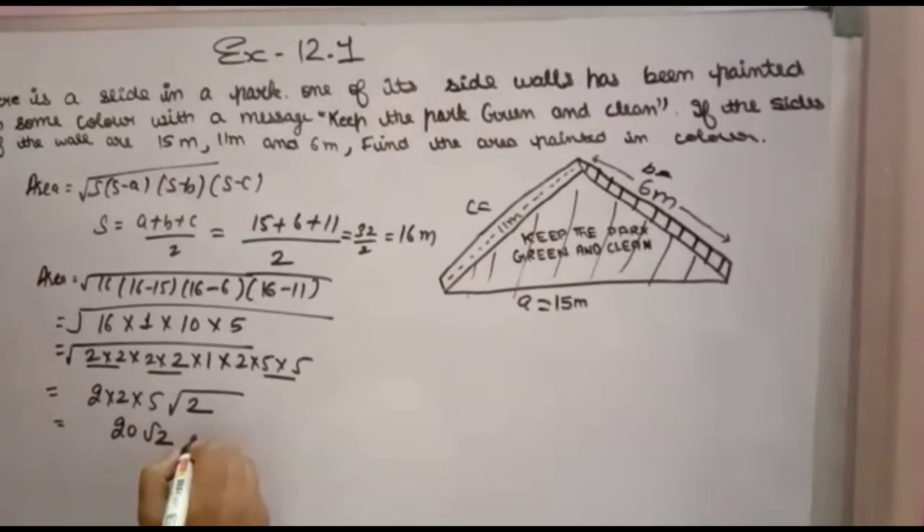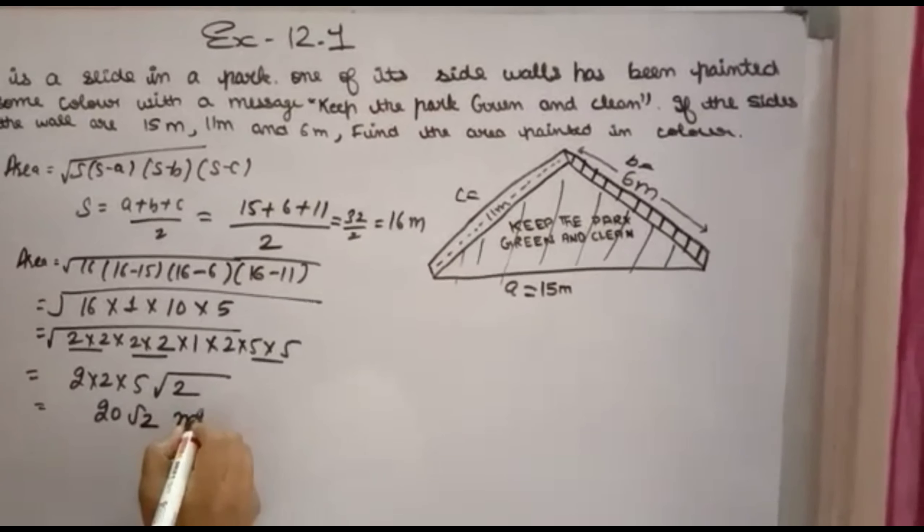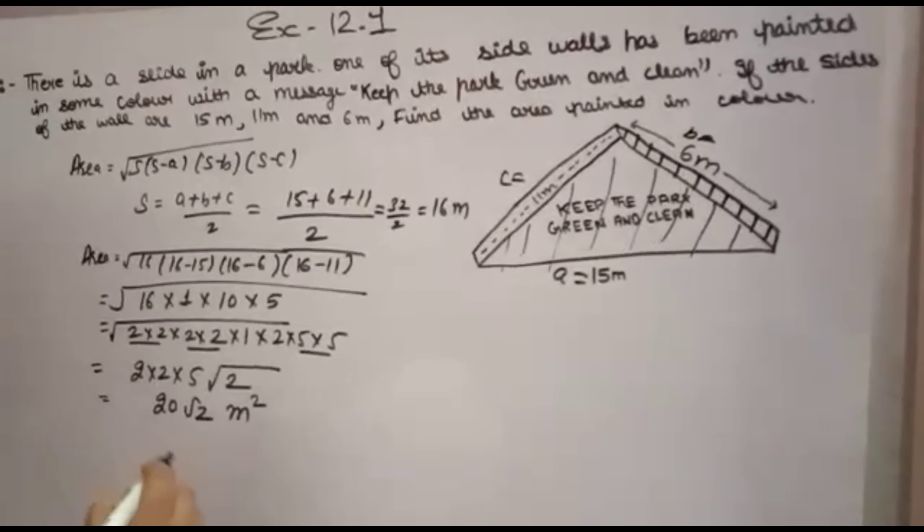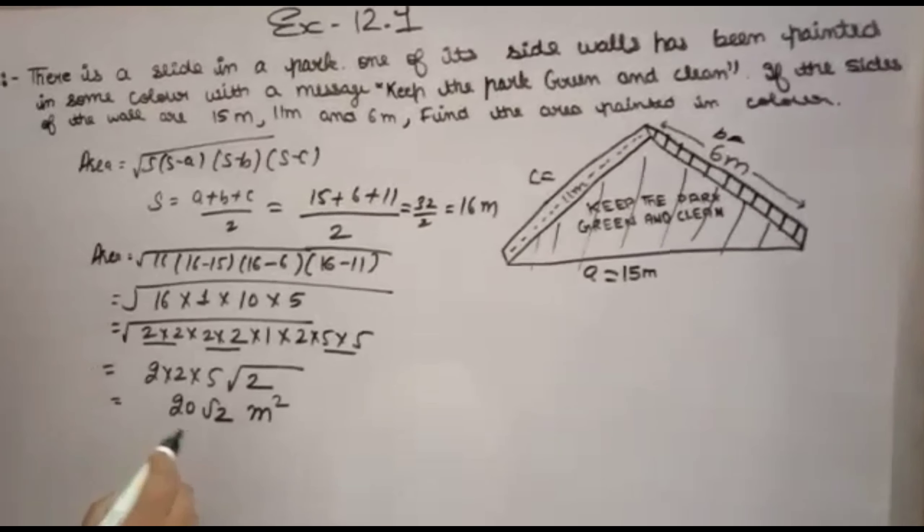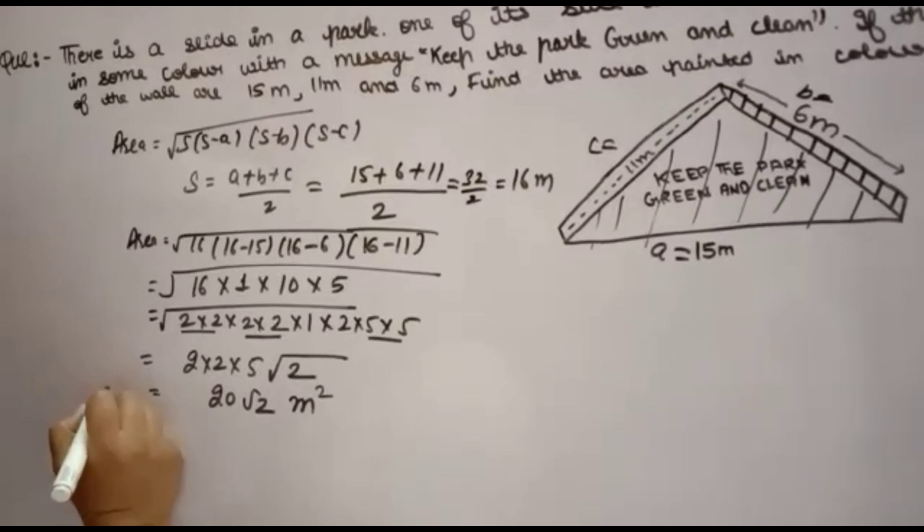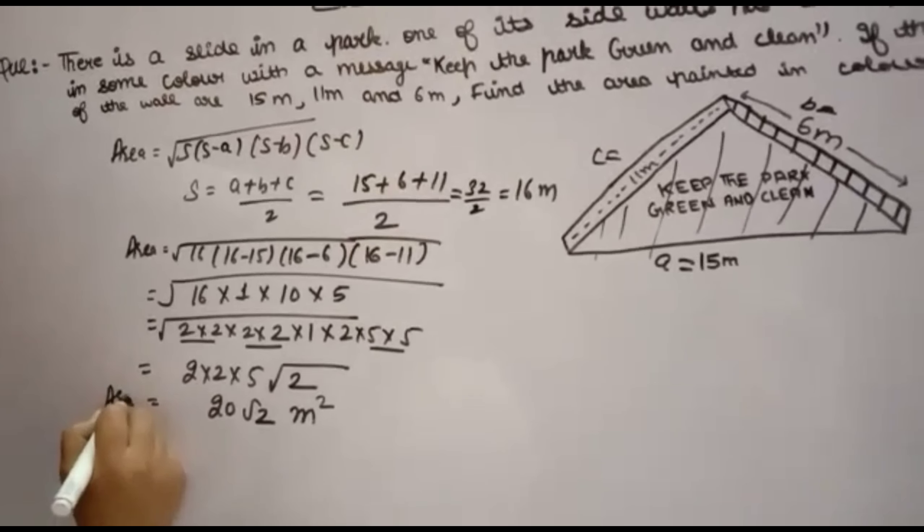This is the area. Area is there and other units are in meter, so you have to write meter square. Area is always in square. The answer will be 20√2 meter square. This is the answer. Thank you.